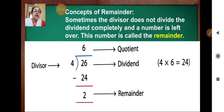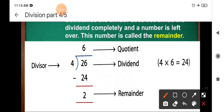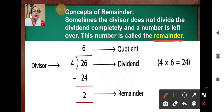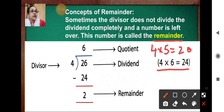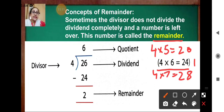Concept of remainder: sometimes the divisor does not divide the dividend completely, and a number is left over — this number is called the remainder. Now, twenty-six divided by four: four sixes are twenty-four, four fives are twenty, four sevens are twenty-eight. Twenty-four is closer to twenty-six, so four sixes are twenty-four. After subtracting, six minus four gives two — two is the remainder.